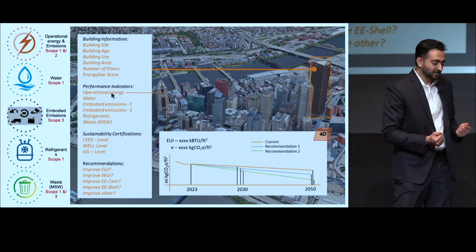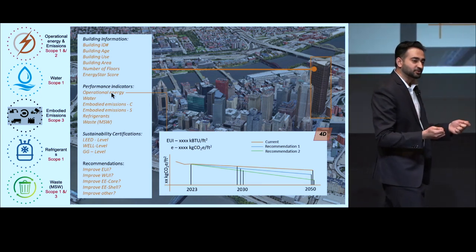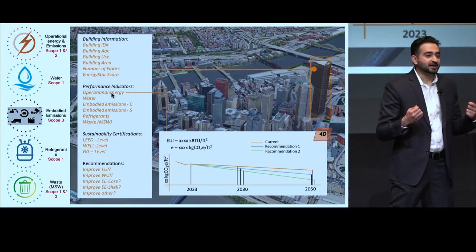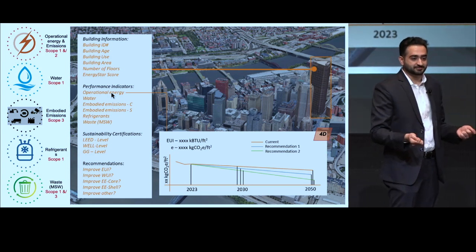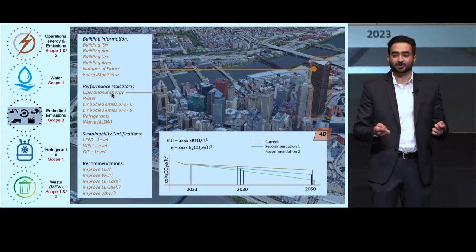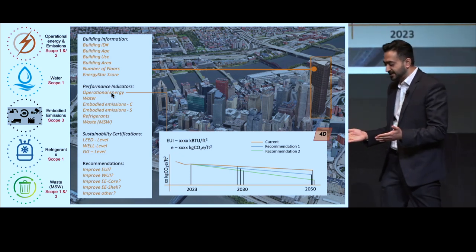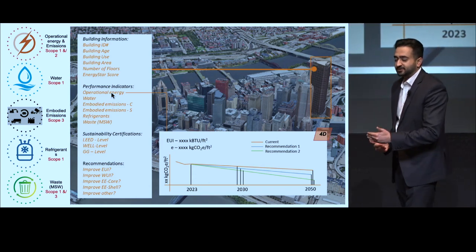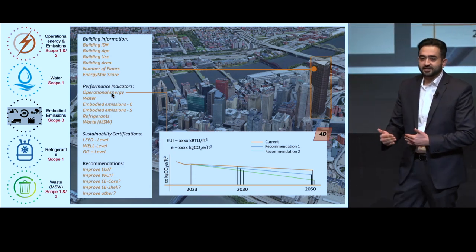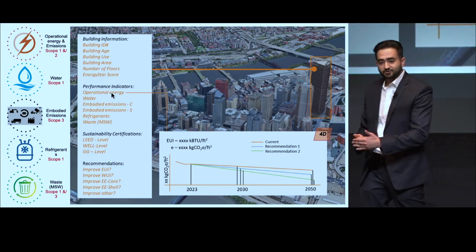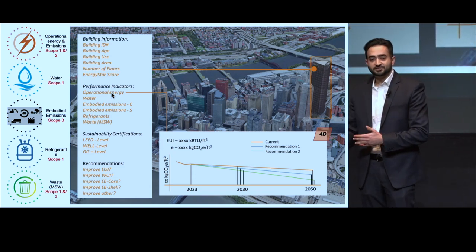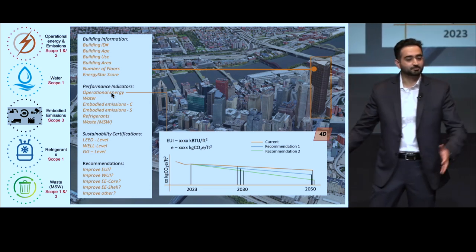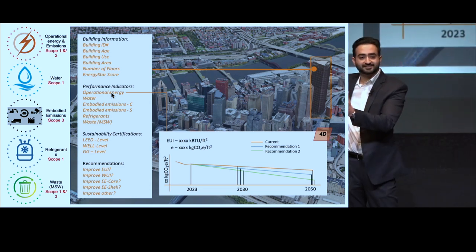Building-related Scope 3 emissions are emissions that are indirect — for example, the emissions that result from extraction, processing, manufacturing, transportation, and installation of construction materials themselves to build the buildings.